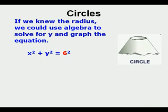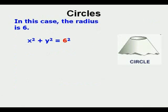If we knew the radius, we could use algebra to solve for y and graph the equation. This is for a simplified version where h and k equal zero. In this case the radius is 6, so x squared plus y squared equals 6 squared.